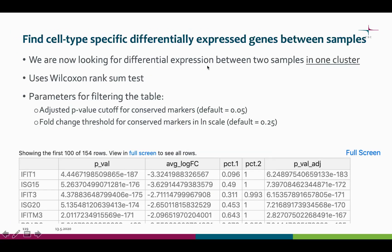The same tool also gives you the differentially expressed genes between the samples in a cluster of your choice. This tool gives results for one cluster at a time, and you can give the cluster number as a parameter. The test here is very similar to the one for conserved markers, and you also get a filtered table as a result. Note that you can further filter the table using a filtering tool in the utilities category.